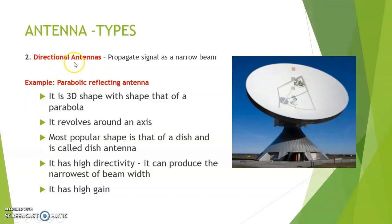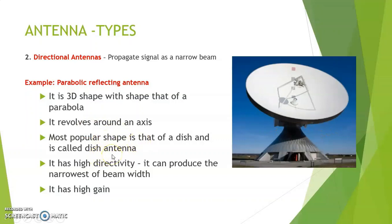The second type is called a directional antenna, which is used to propagate signal as a narrow beam. The main example is a parabolic reflecting antenna, which is a 3D shape in the form of a parabola. It revolves around an axis and the most popular shape is that of a dish, so it is also called a dish antenna. It has high directivity — that is, it can produce the narrowest beam width — and it also has high gain.